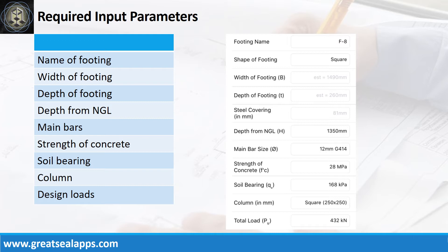Enumerate input parameters required. Footing name, F8. Shape of footing, square. Depth from natural grade line, 1350 mm. Main bars, 12 mm bar at grade 414. Strength of concrete, 28 MPa. Soil bearing capacity, 168 kPa. Column size, 250 mm x 250 mm. And factored load, 432 kN.